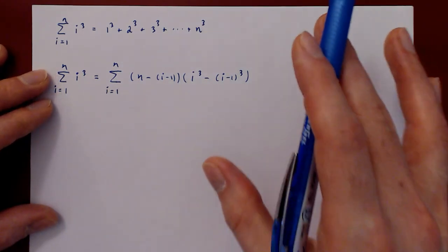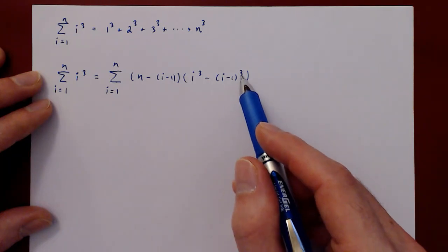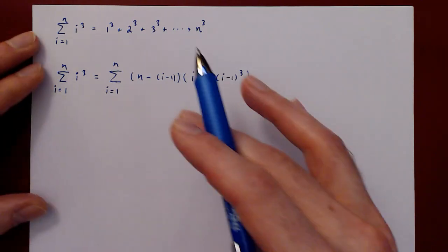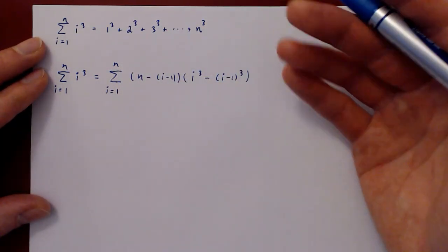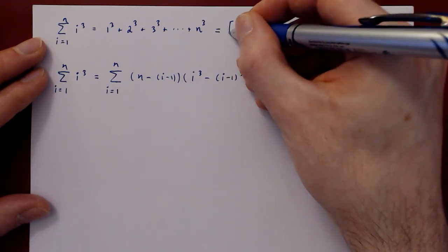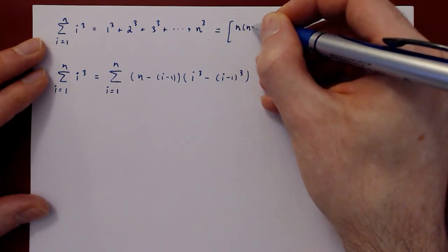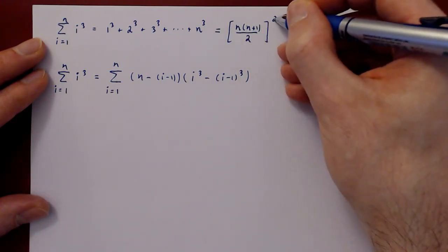So I leave the rest of this as an exercise. You can expand this out, simplify, multiply, use basic properties of summation. You can follow along the same steps as we have done in the previous video, and you will find that the summation formula for the cubes is simply n times n plus 1 over 2 squared.